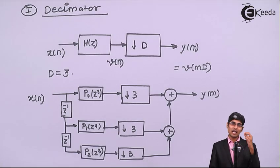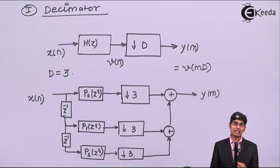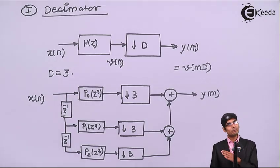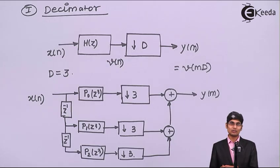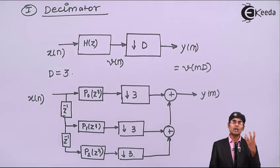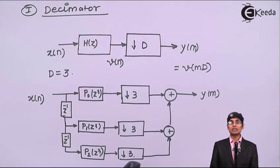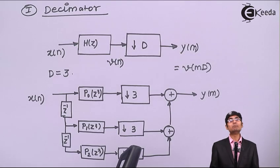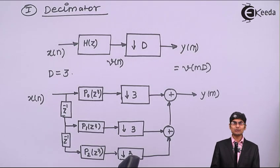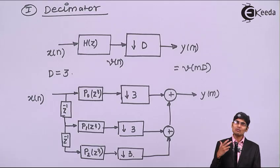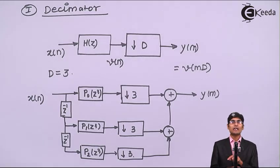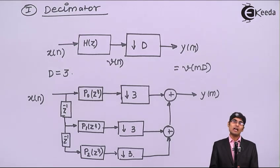I will be picking only the Dth sample — the zeroth, then the third, then the sixth, and so on — dropping D minus one samples in between. So why calculate convolution on D minus one samples? The filter is working at a higher data rate whereas the output does not demand that high a data rate. We should first down-sample and let the filter operate at the down-sampled rate.